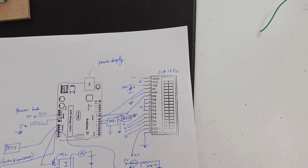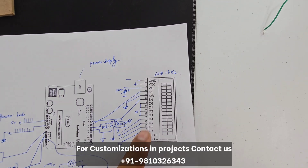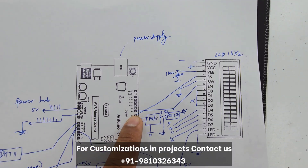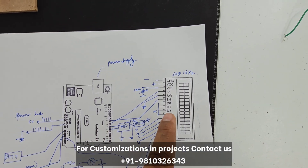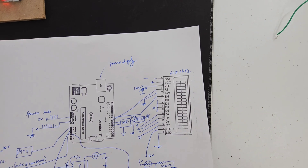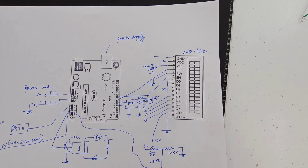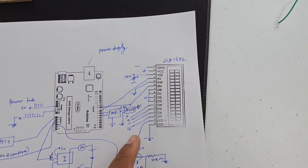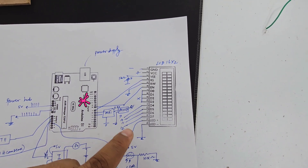We put RW to ground so we can always write whatever we want on the LCD. For enable, to enable the device, we have put it on pin 8. D4 is left empty — not connected to anything — because we are using 4-bit mode of this LCD.